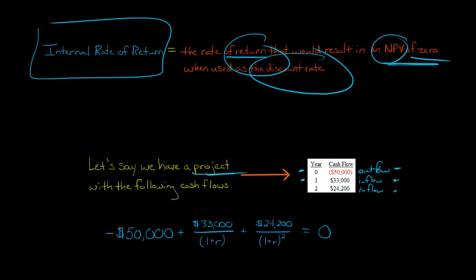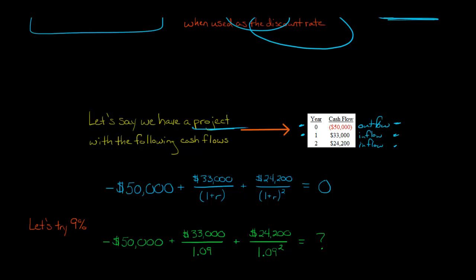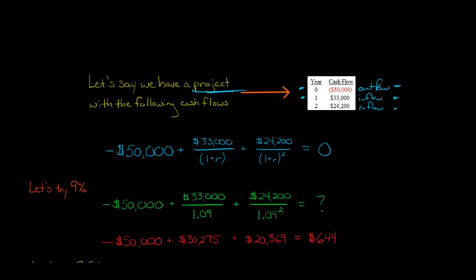And so we can use trial and error. What we do is basically plug in different numbers for our R. So we can try, for example, 9%. So if we try 9%, we say, let's just take the same thing here and let's just plug in 0.09 for our R. So we got negative 50,000 plus 33,000 divided by 1.09. And then 24,200 divided by 1.09 to the second power. Again, that's because that's two periods in the future. So we're just using the time value of money to discount these cash flows. And it gives us an NPV. So if we calculate these out, you get an NPV of $644.